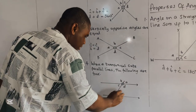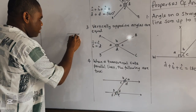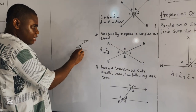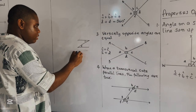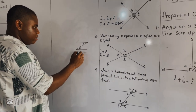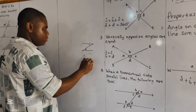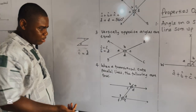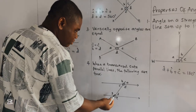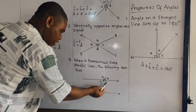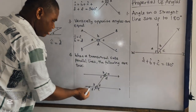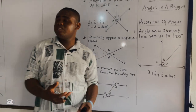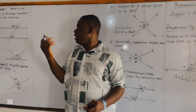You have a Z shape here, where angle C and angle D are alternate angles, so angle C is equal to angle D. You can also refer to D and G — D and G are also alternate angles. Now let's move to our examples.